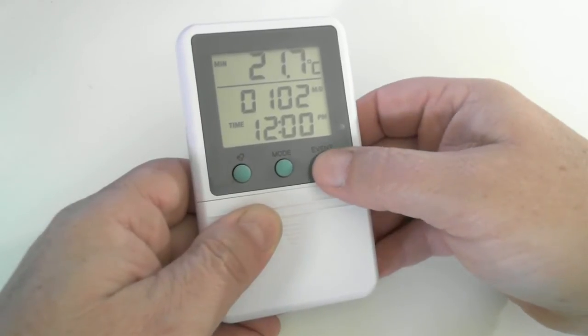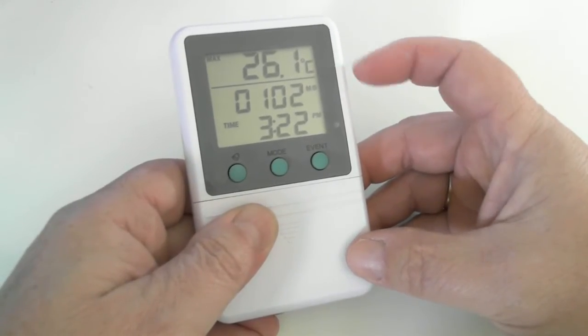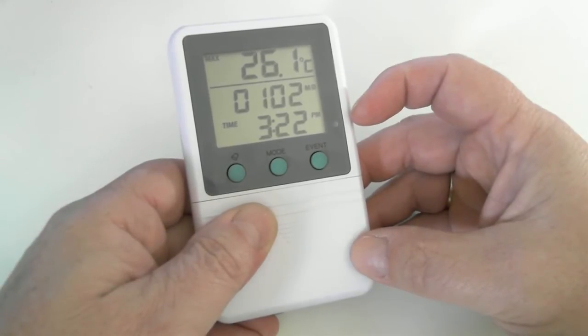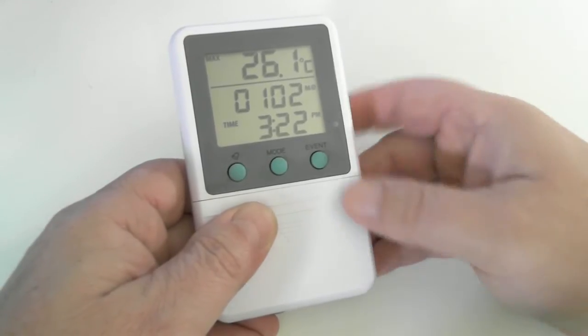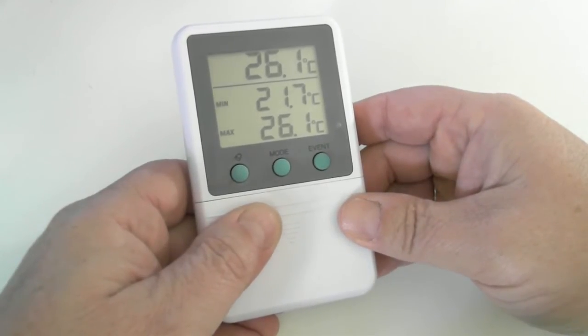Press event again and now we see the max temperature with the month and day in the center and the time at the bottom of the screen of that occurrence. Press event again and we are back to the main display screen.